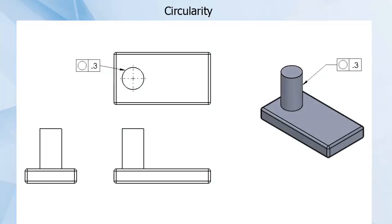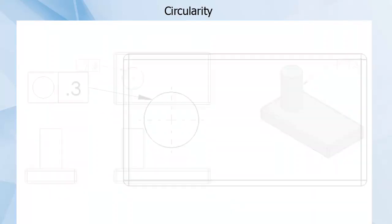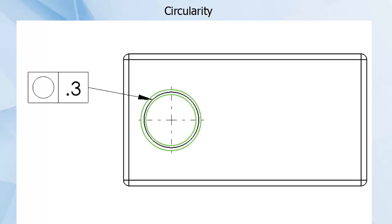Circularity specifies a circular tolerance zone or a TZ framed by two concentric circles. For instance, every cross-section of this pin would need to fit inside a 0.3 mm tolerance zone.